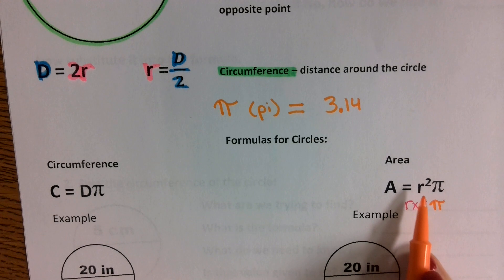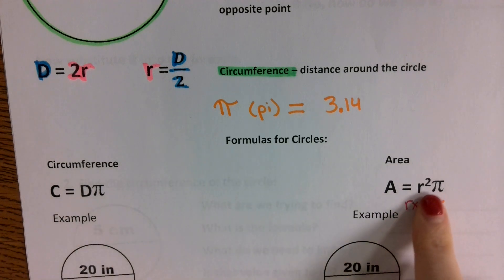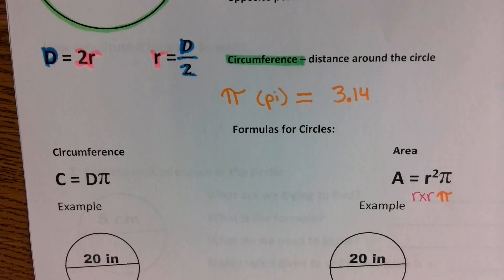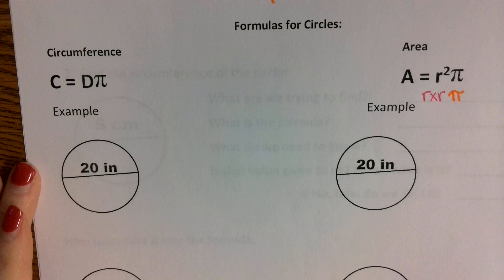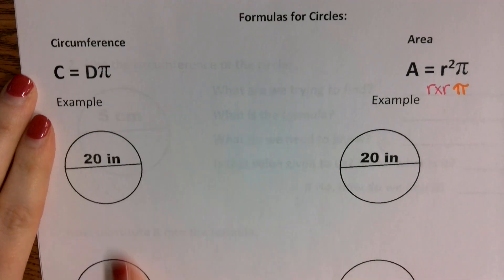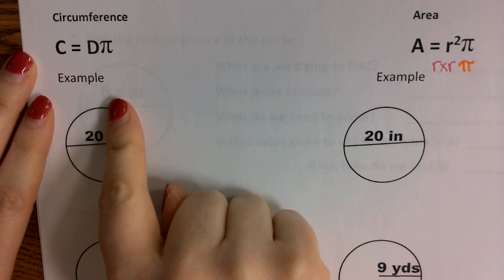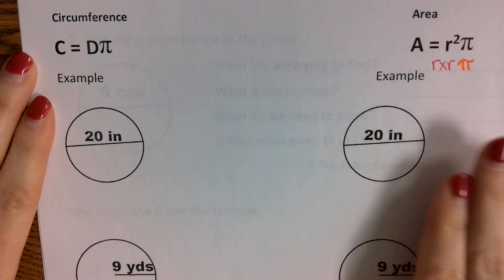If you don't remember r squared, at least remember r times r. R times r is not the same thing as r times 2 — r times 2 would give you your diameter. R times r gives you r squared. So we're just going to go over a couple of really quick examples. For these two circles I want to find the circumference, and for these two circles off to the right, I'm going to find the area.